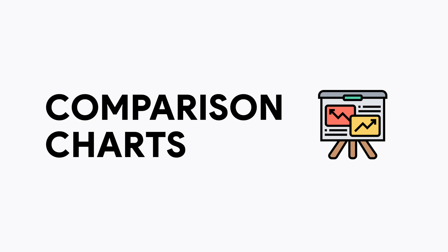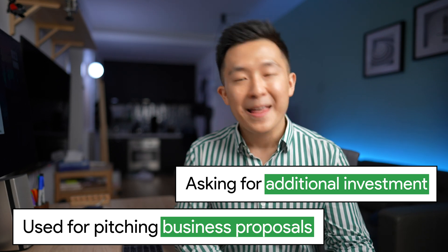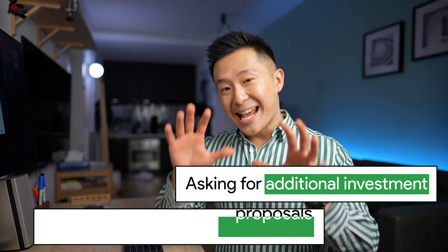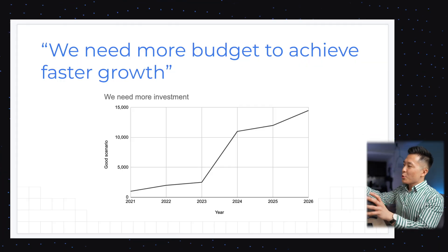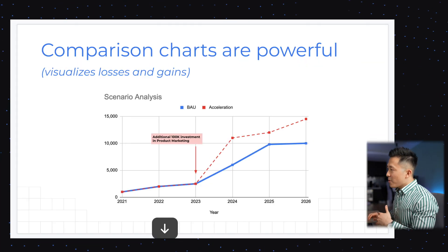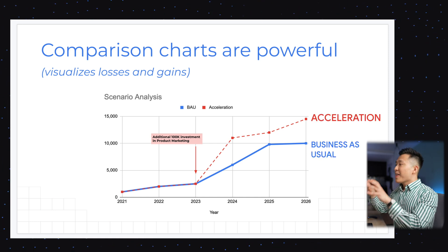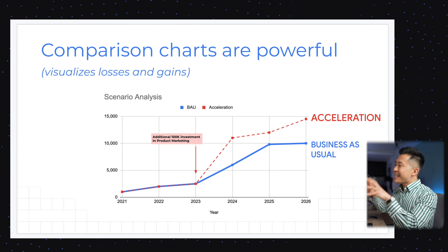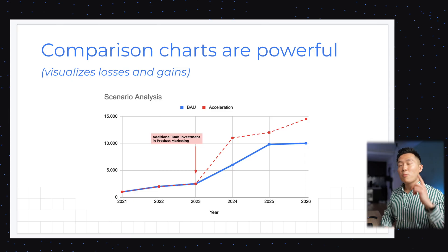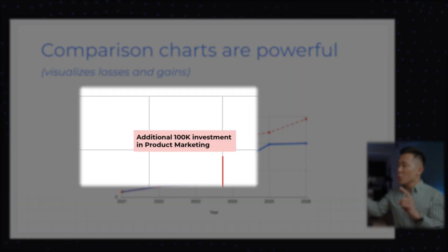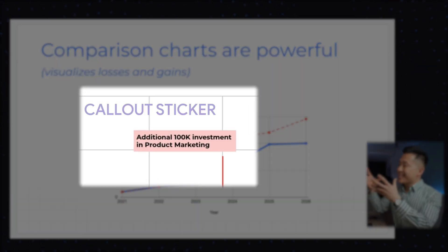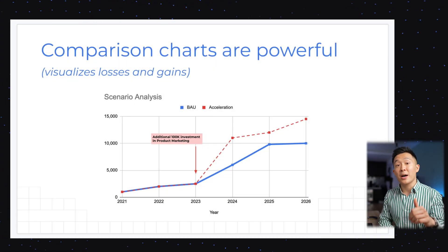Tip number five, when it comes to creating charts, is extremely powerful when it comes to pitching business proposals or asking for additional investment. And that is to use something I call a comparison chart. You can create a simple line graph to visualize growth if you receive more support, but why not take a step further to show the two possible scenarios side by side. If the underlying calculations are accurate, this chart makes it seem almost foolish not to invest in that acceleration plan. Pro tip: when creating comparison charts, always make sure to include a call-out sticker that provides specific details about that element. I'll talk about exactly what stickers to use and when to use them later on in this video.